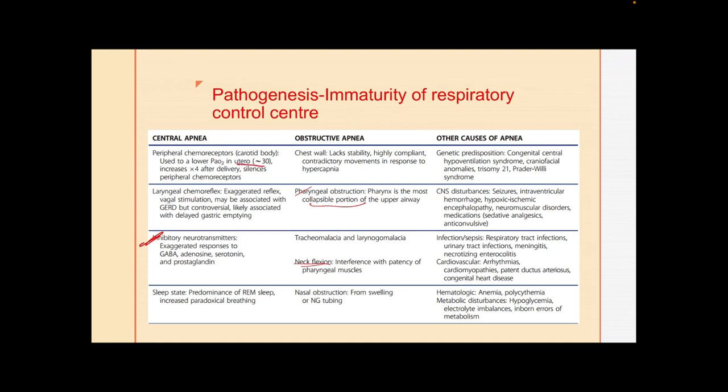The brain is more sensitive to inhibitory neurotransmitters than excitatory ones. There is also hypoxic ventilatory depression: in utero the baby is used to a PaO2 of around 30, and once the baby is born PaO2 increases. Preterm infants experiencing hypoxia more often tend to compensate for higher oxygen levels with apnea rather than increased breathing. This is the oxygen-dependent mechanism.